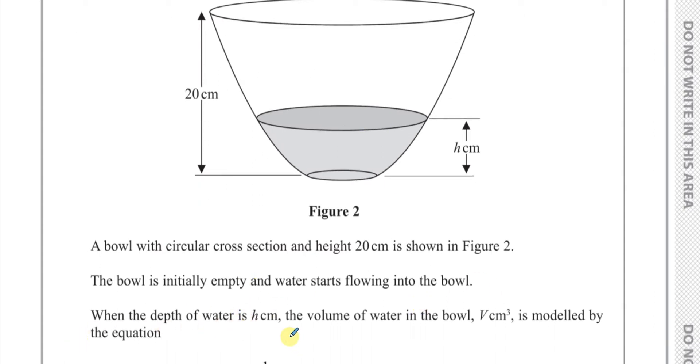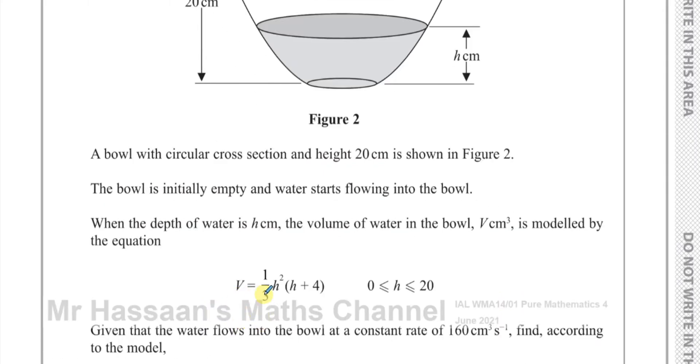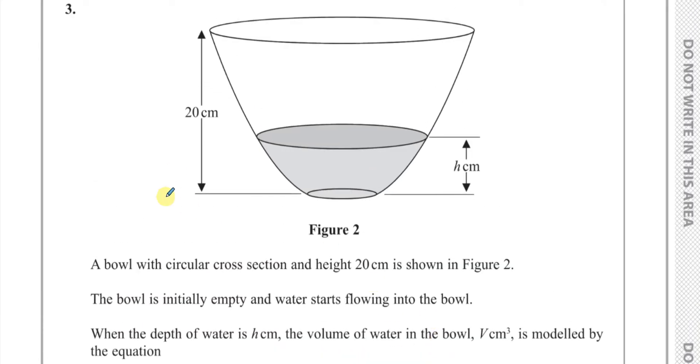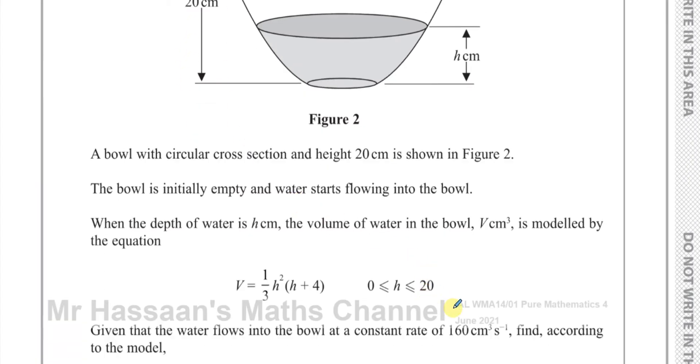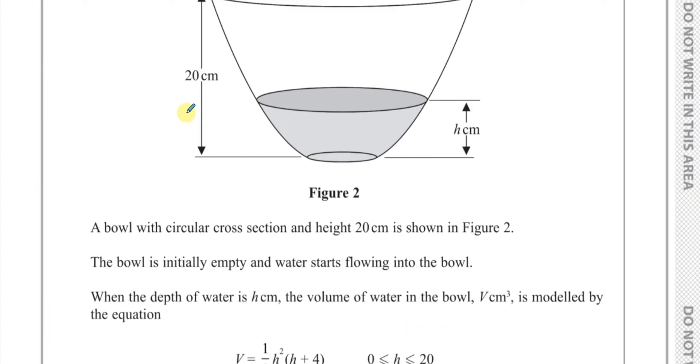When the depth of the water is h centimeters, the volume of the bowl, V centimeters cubed, is modeled by the equation V equals a third h squared times h plus 4. And h is between 0 and 20. As you can see, the height of the bowl is 20 centimeters. Of course, h cannot be more than 20 and it can't be less than 0.